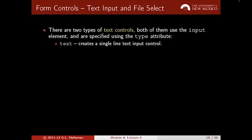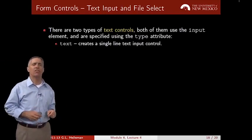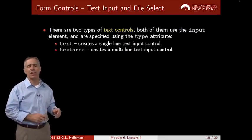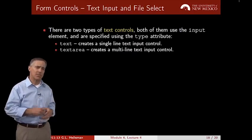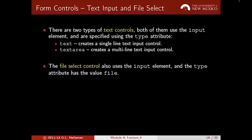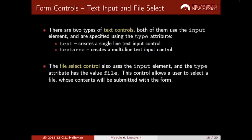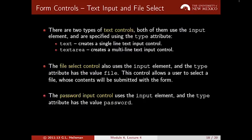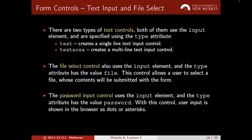There are two types of text controls, both using the input element: 'text' creates a single-line text box (used earlier for first name and last name), while 'textarea' creates a larger multi-line area. The file select control allows a user to attach a file, which is sent to the server on submission. There's also a password input (type='password'), which displays the user's input as dots so the password isn't visible on screen.